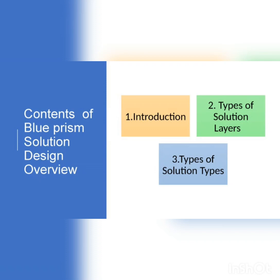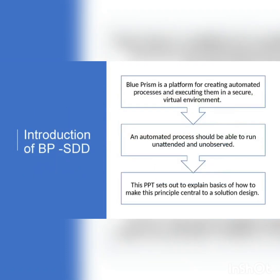When we talk about solution layers, there are three types: process, object, and application. Like any other applications — if you go for dotnet or Java — there are three types of layers, the same as the MVC model. So the same levels apply here: application, process, and object.